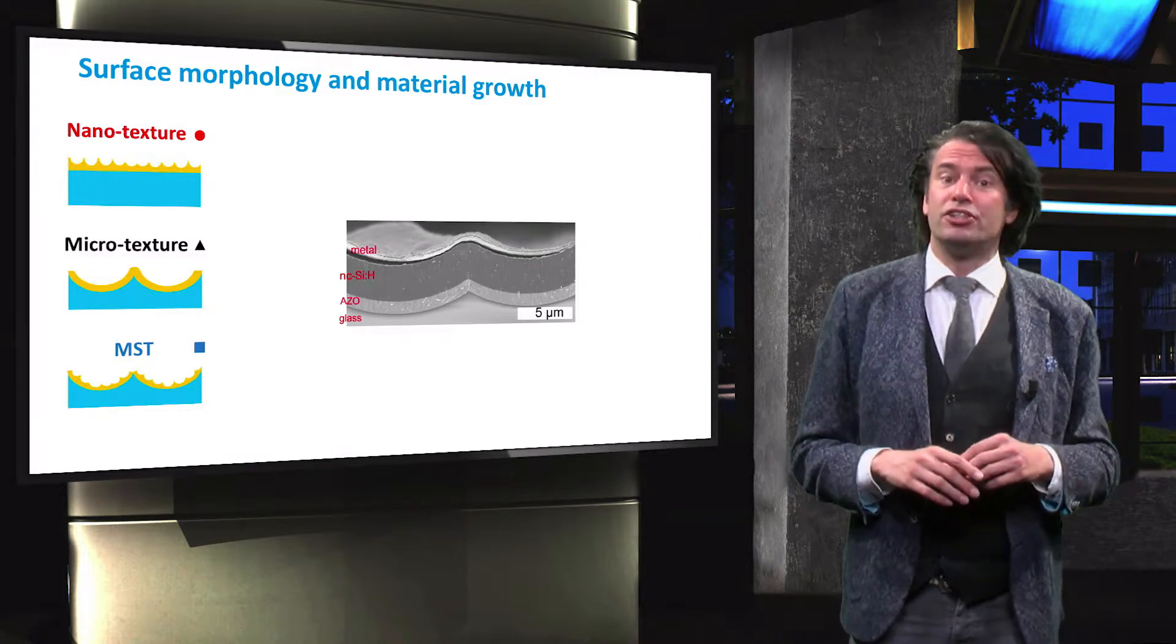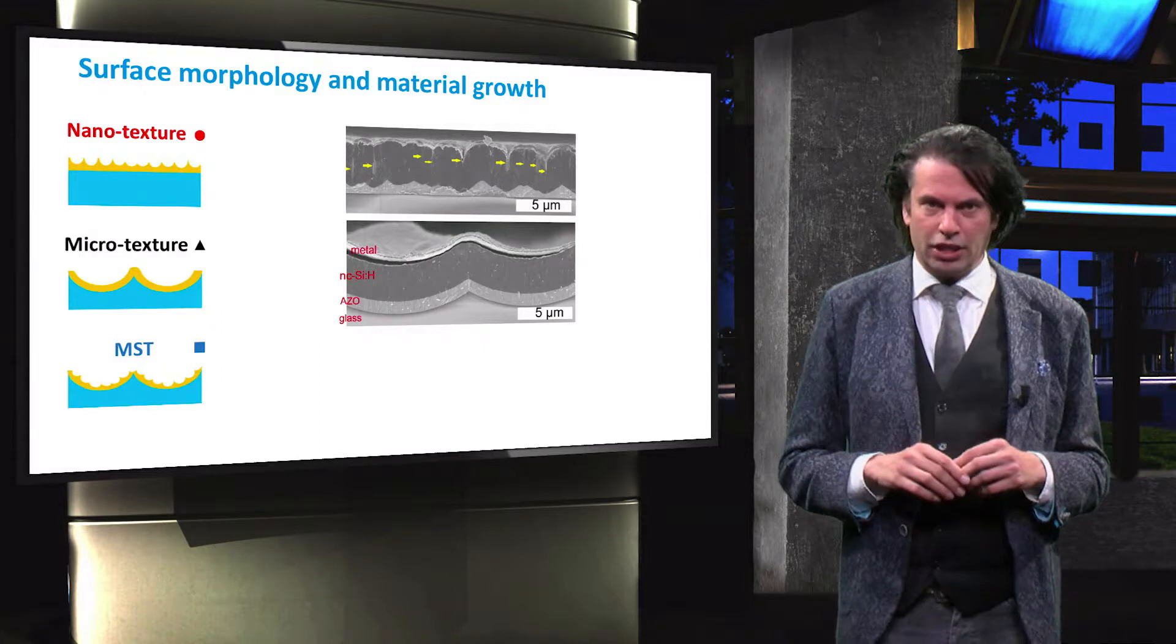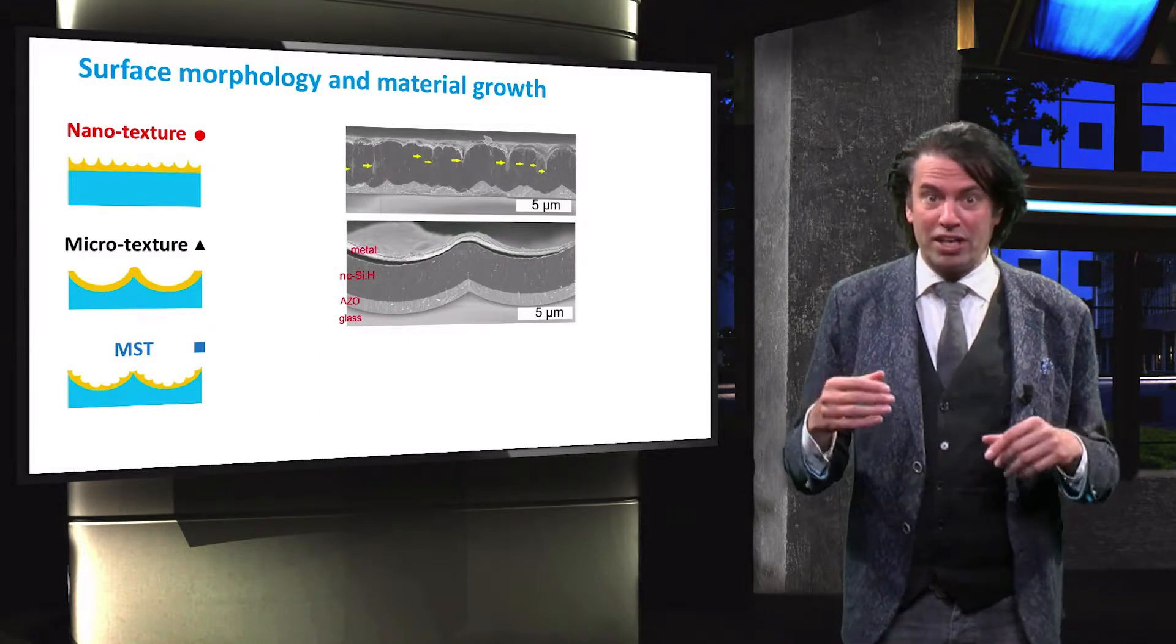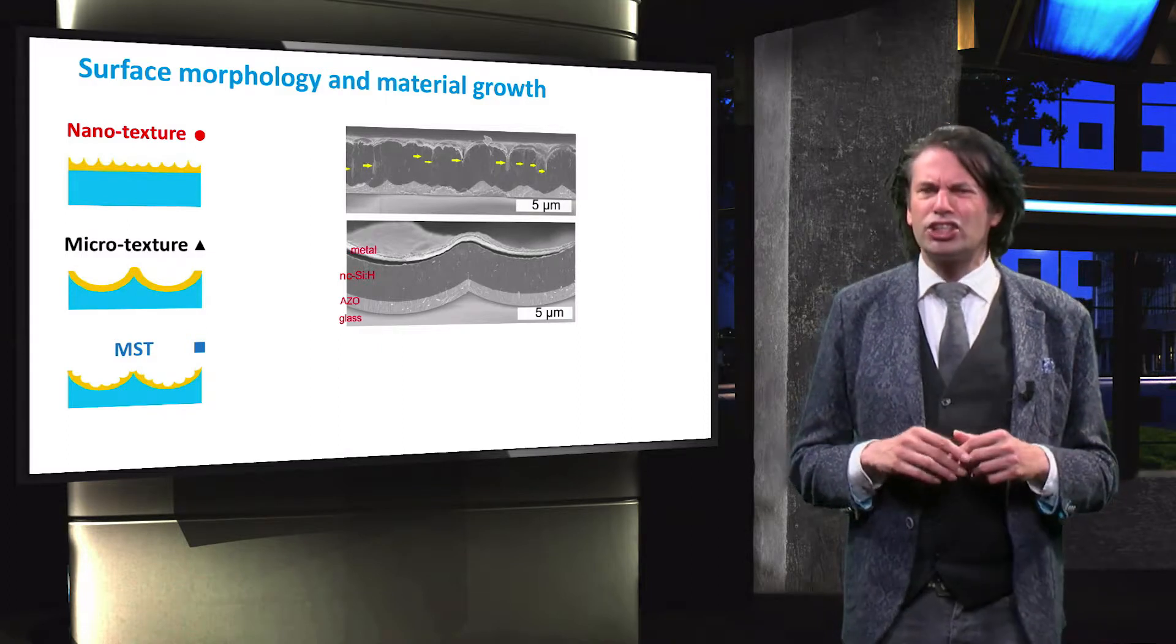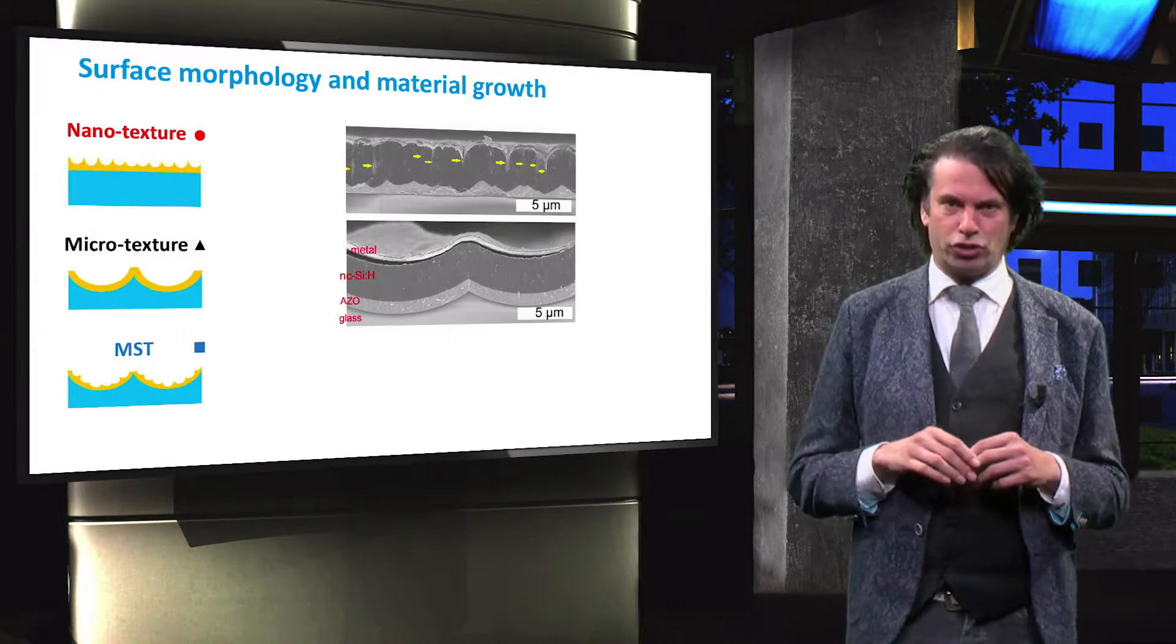Now we consider the same absorber layer on top of the nanotextured TCO layer. Whereas the silicon on top of the microtexture has grown relatively uniform, large cracks are present in the crystalline silicon on top of the nanotexture surface.